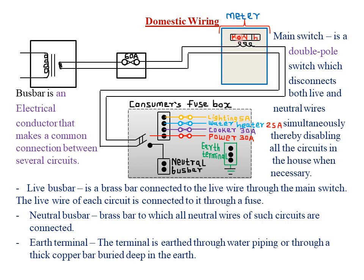At the meter, we detect the amount of current flowing through in terms of kilowatt-hours — so we measure the amount of power in kilowatt-hours. From the meter, the current flows to the consumer fuse box, which consists of the lighting circuit, the water heater, the cooker, and the power circuit.